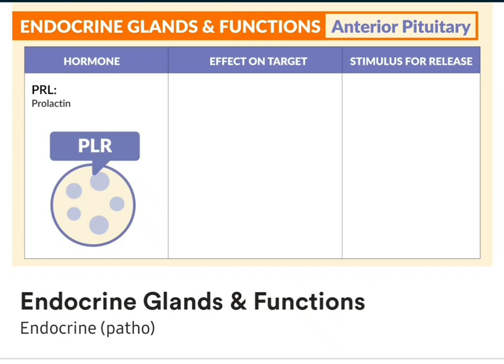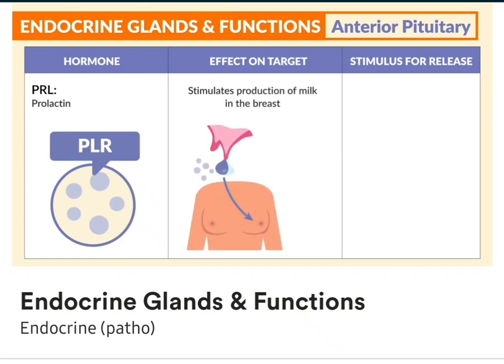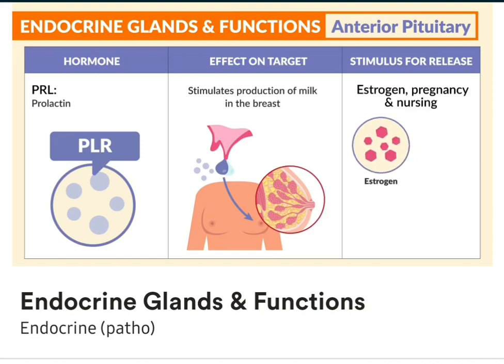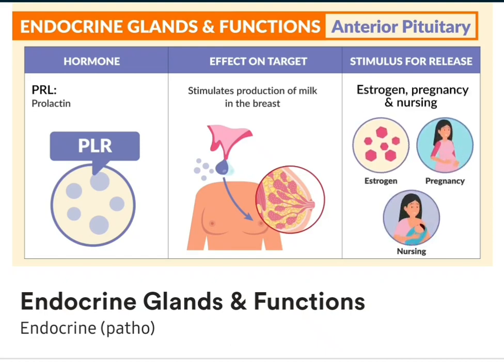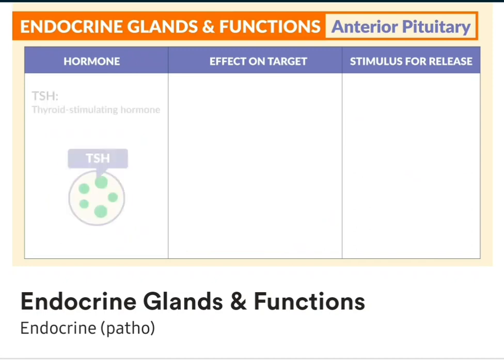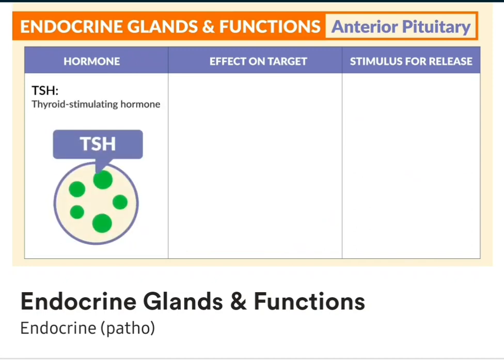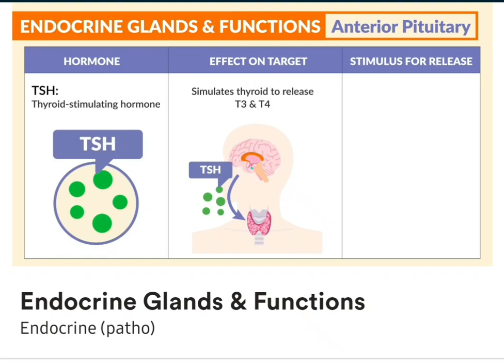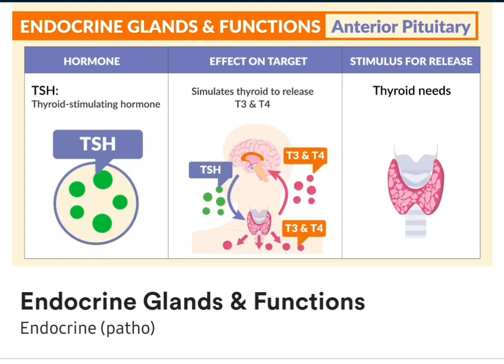Next is PRL, prolactin. It stimulates the production of milk in the breast, and the stimulus for release is estrogen, pregnancy, and nursing. Next is TSH, the thyroid-stimulating hormone. It stimulates the thyroid to release T3 and T4 for thyroid needs.